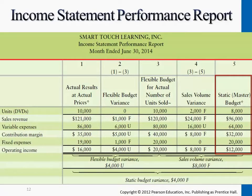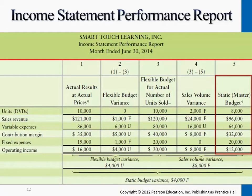With a certain level of sales expected, we expect to sell 8,000 units, each unit sold at $12. That's the expected sales price. So we expect to have $96,000 in sales revenue. Variable expenses total $64,000, meaning that each unit you expect to spend $8. So contribution margin gives us $32,000. Then we expect all the machine depreciation and fixed salary to be $20,000. So overall, this is our expected operating income.